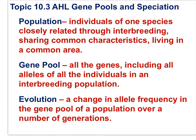The first step in examining speciation, also known as microevolution, is to define some terms. A population would be individuals of one species closely related through interbreeding, sharing common characteristics, and living in a common area. A gene pool is all the genes including all the alleles of the individuals in an interbreeding population. And evolution is a change in the allele frequency of the gene pool of a population over a number of generations.